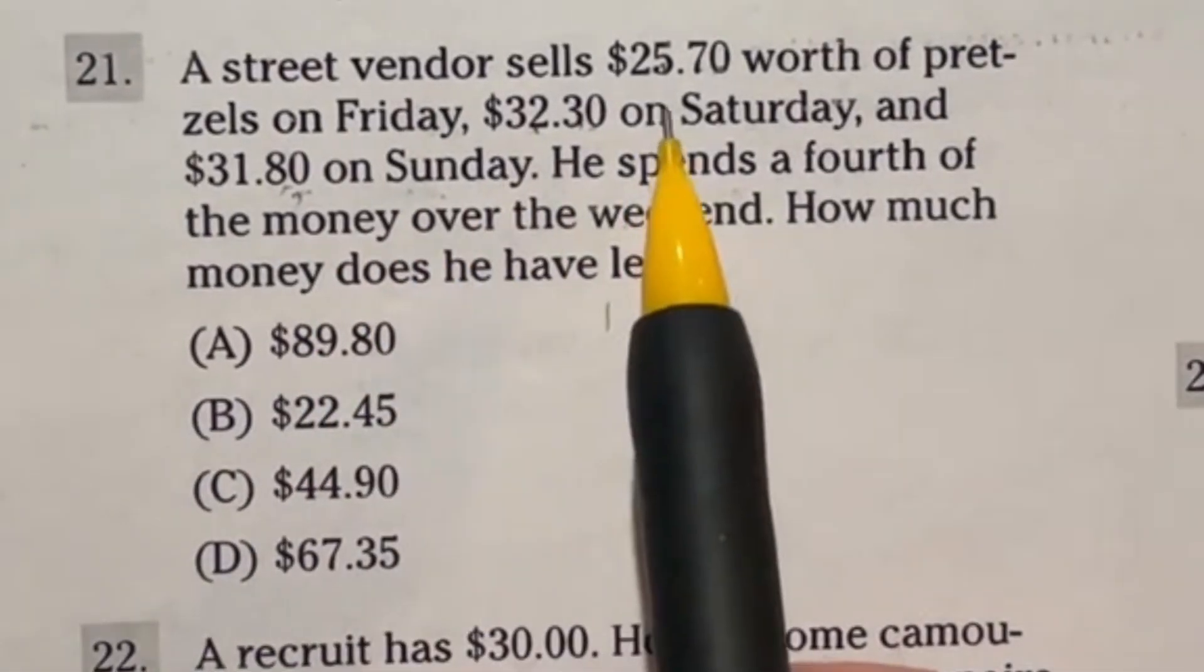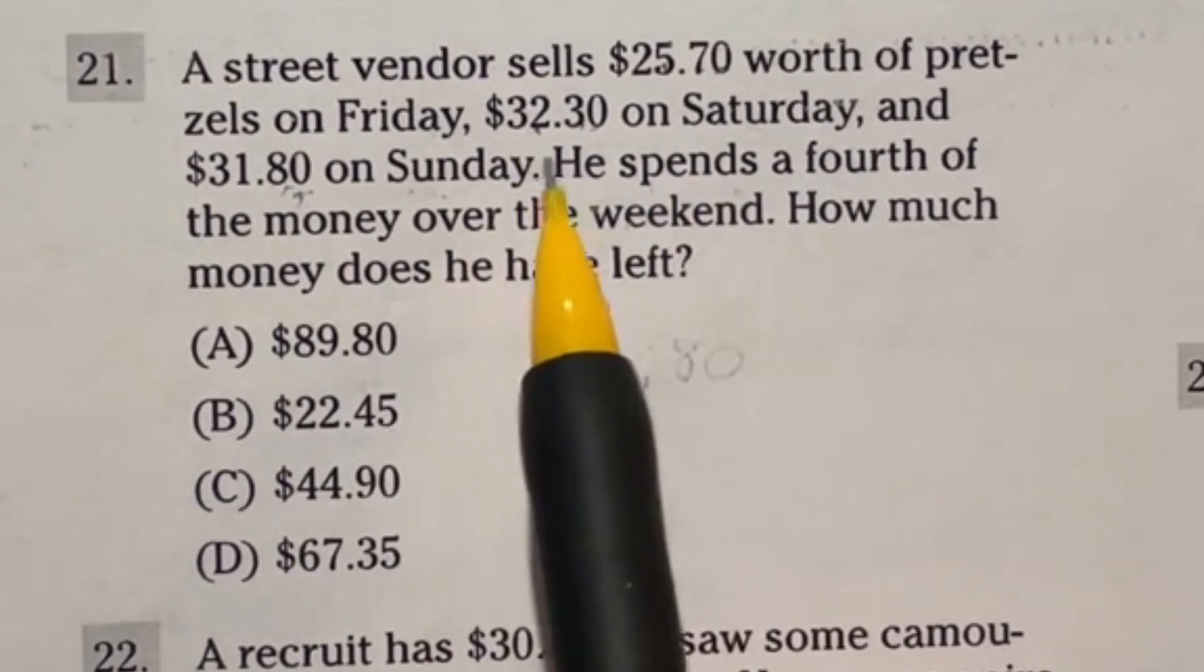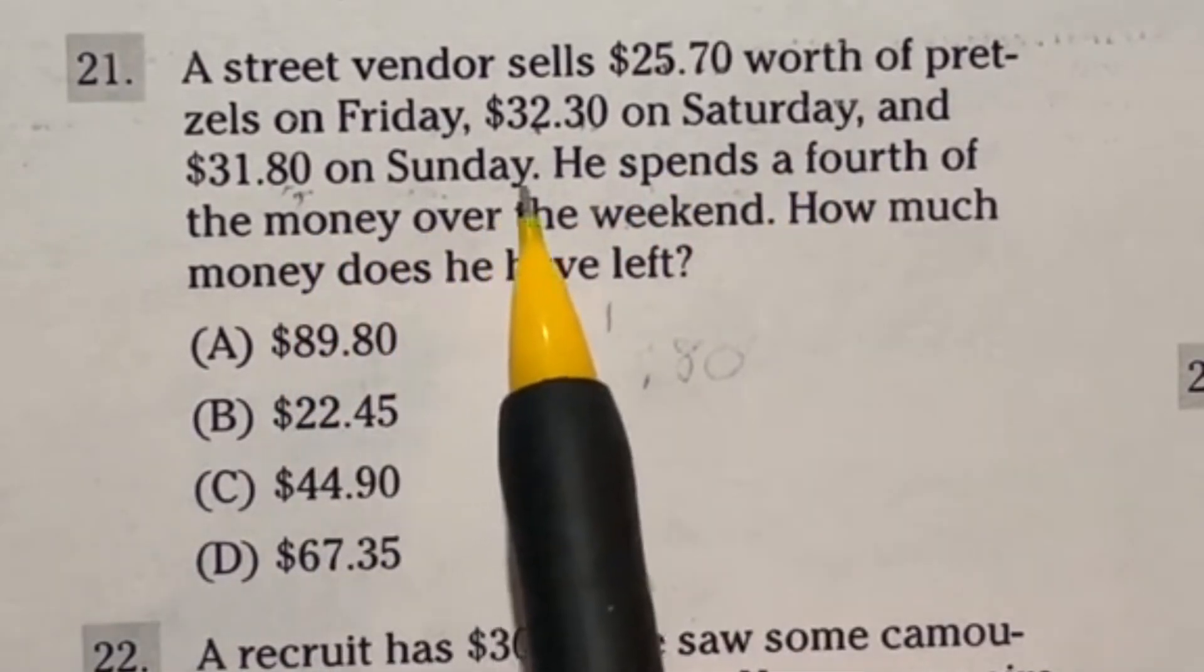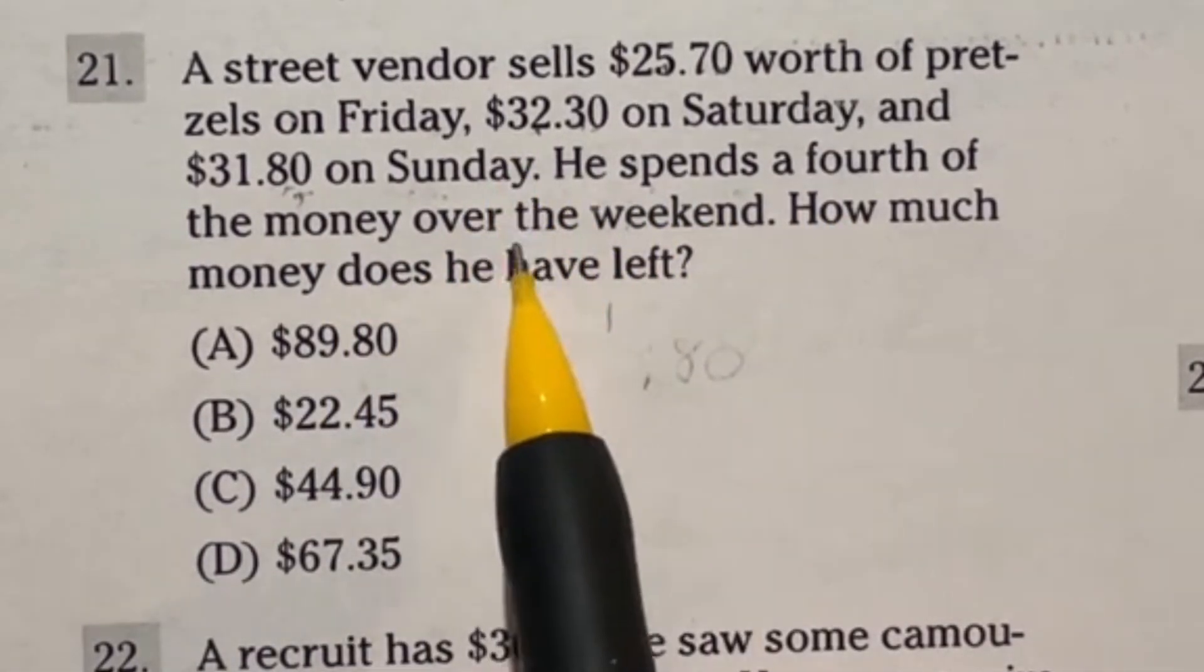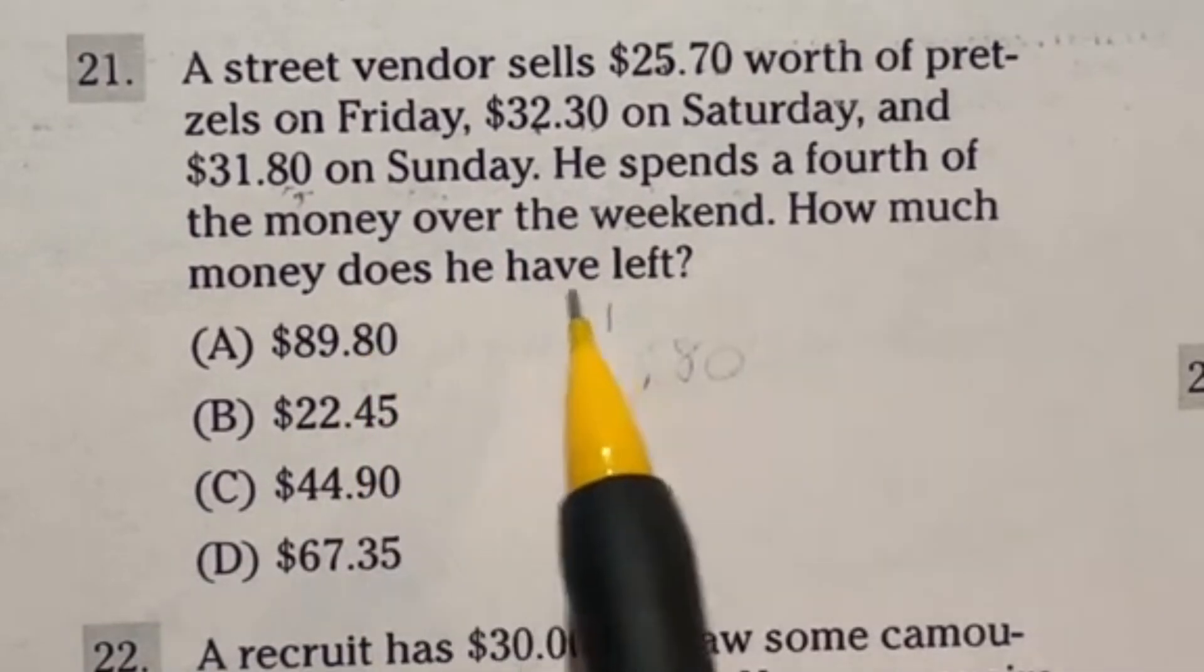It says a street vendor sells $25.70 worth of pretzels on Friday, $32.30 on Saturday, and $31.80 on Sunday. He spends a fourth of that money over the weekend. How much money does he have left?